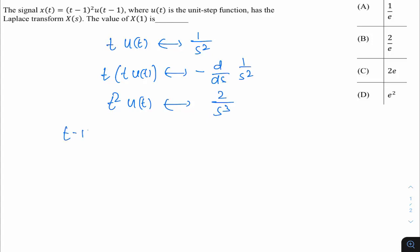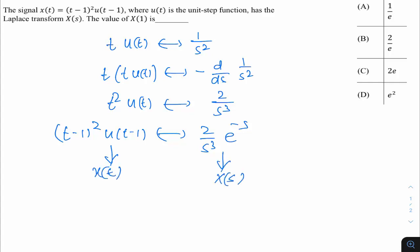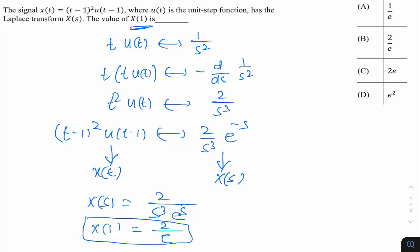Introducing the shift: (t−1)²·u(t−1) by the shifting property gives X(s) = (2/s³)·e^(−s). Substituting s=1: X(1) = 2/(1³)·e^(−1) = 2/e. This is given in option B, so B is the right answer.